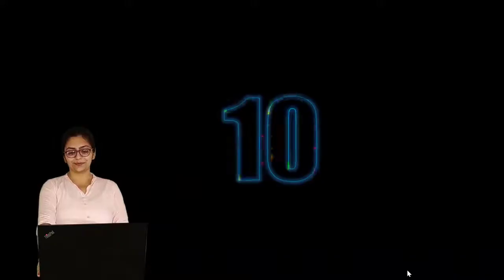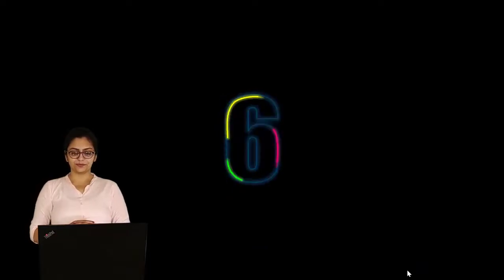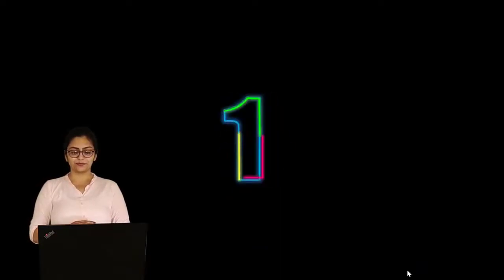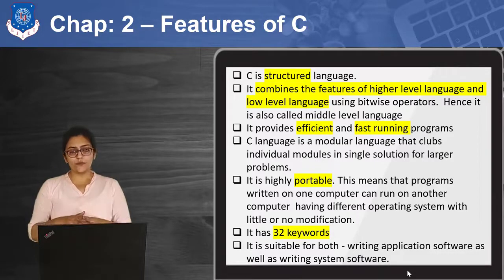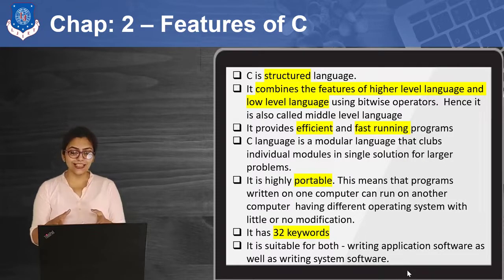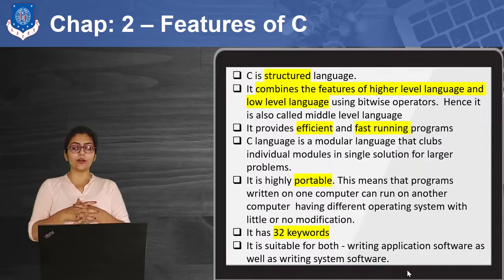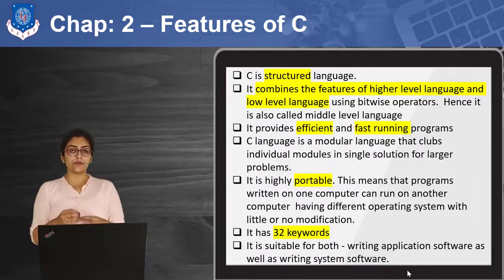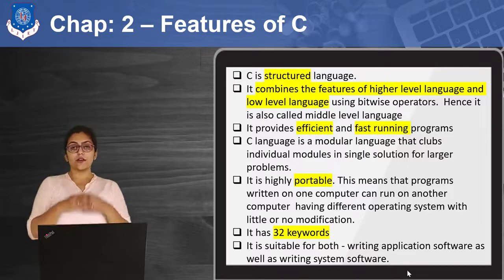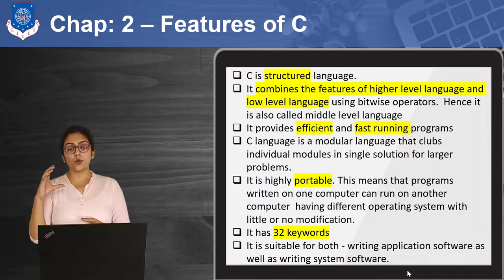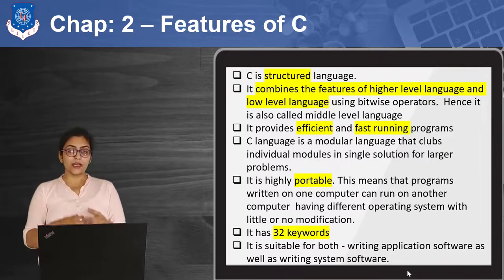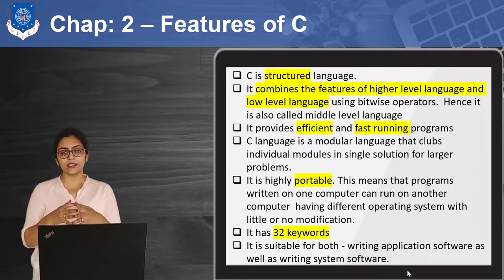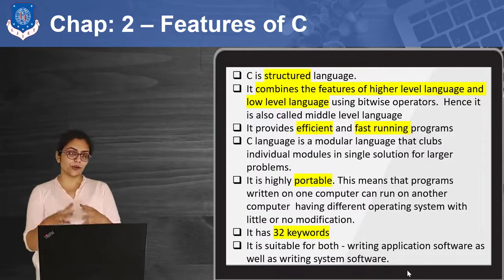So let's begin. First of all, we are going to study the features of C programming language. Whatever we are going to study, we have to know the unique features. We are going to see how C has different features. First of all, C is a very structured language. We can define blocks and we can define scope for the C program. We are going to study scope in the chapter of functions. Right now just understand that C is a very structured language.